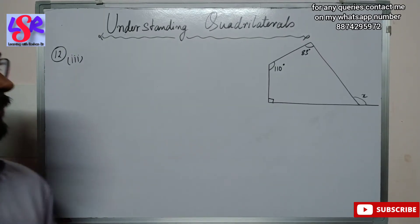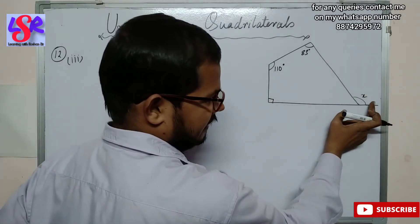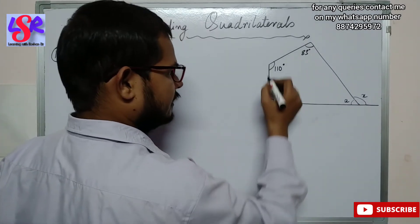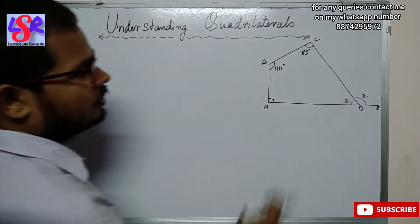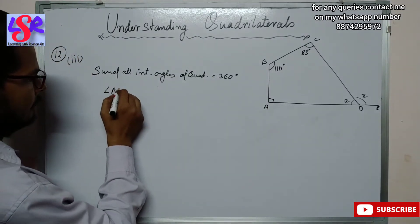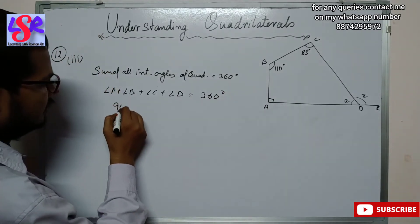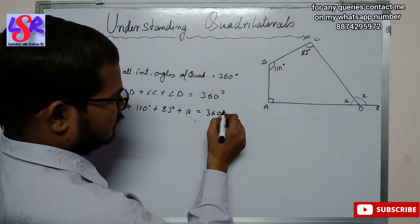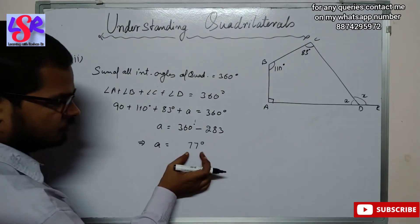The third part of question number 12 has a figure with angles 90 degrees, 110 degrees, and 83 degrees, and we need to find x. We name the quadrilateral A, B, C, D, E and first find angle A. The sum of interior angles equals 360 degrees: 90 plus 110 plus 83 plus angle A equals 360, so A equals 360 minus 283, giving A equals 77 degrees.